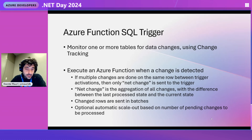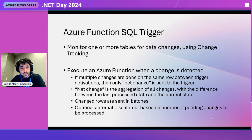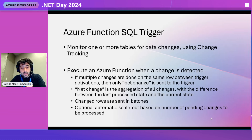On top of Change Tracking, we recently released something called the Azure Functions SQL Trigger. Despite the name, it's not a trigger in the database sense — it doesn't use a database trigger. It's a trigger in the Azure Functions sense, because it is able to execute a function when some change is detected on the target table. The Azure Functions SQL Trigger uses the Change Tracking engine capability behind the scenes, so you don't have to worry about it.